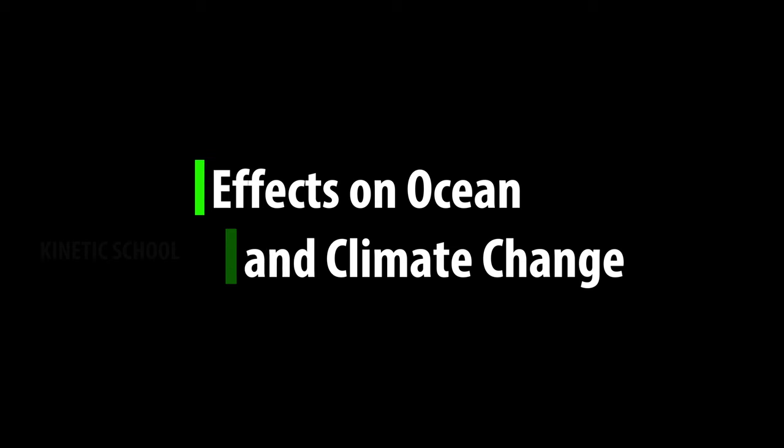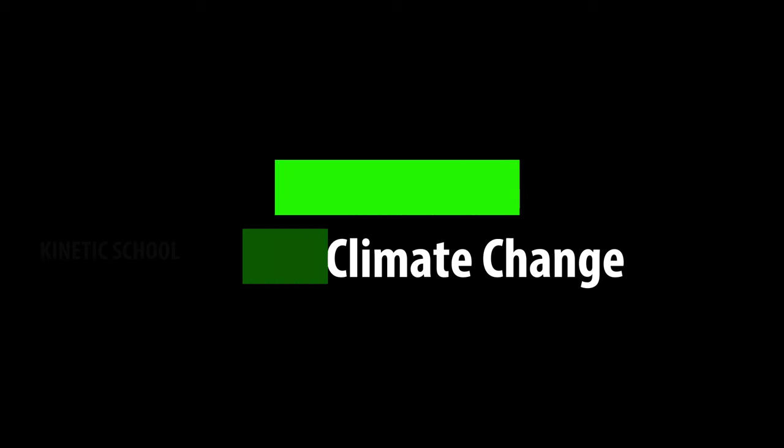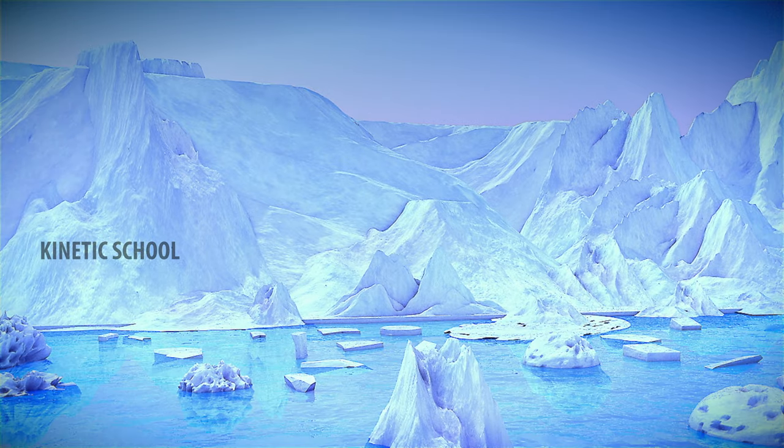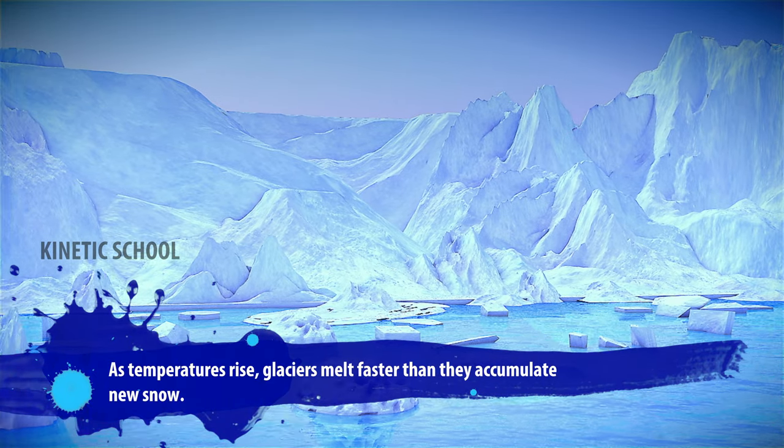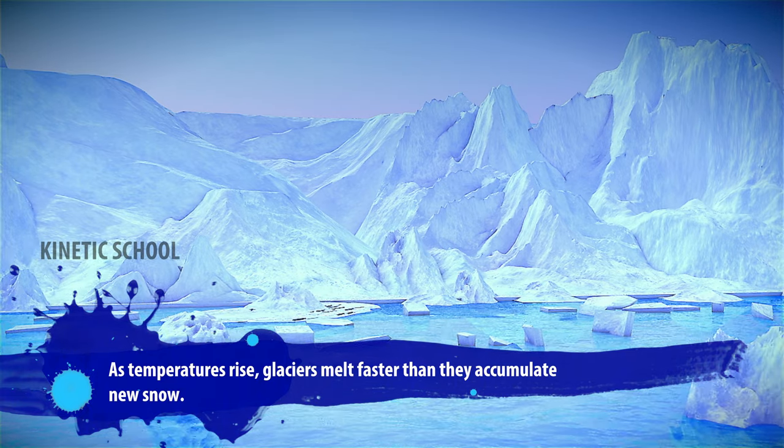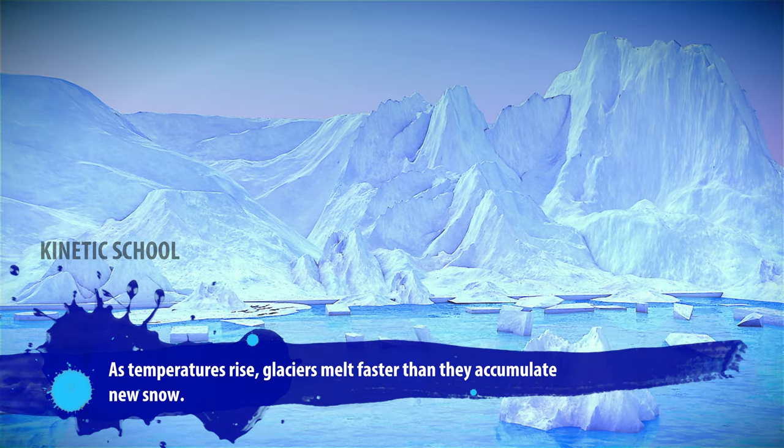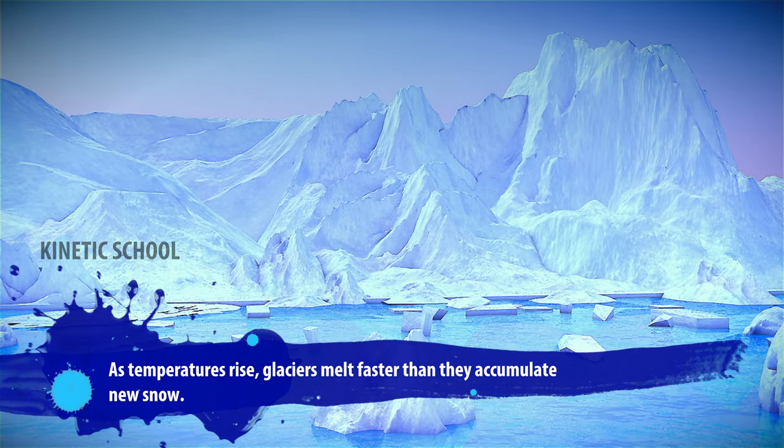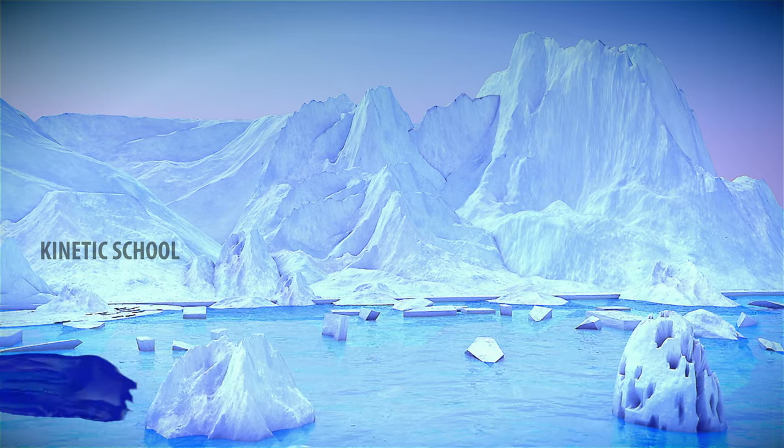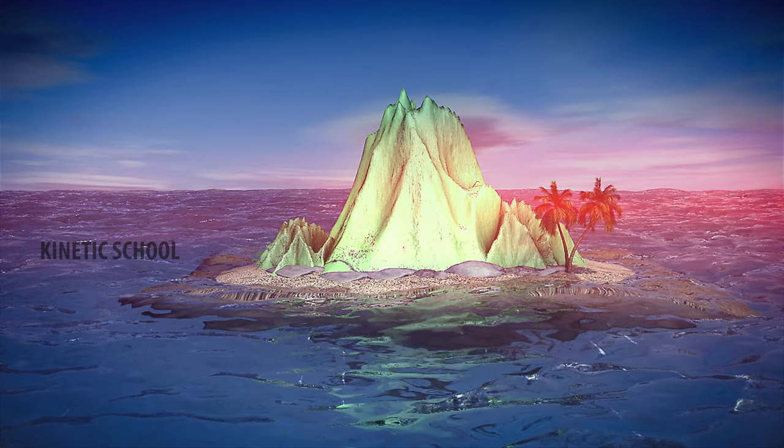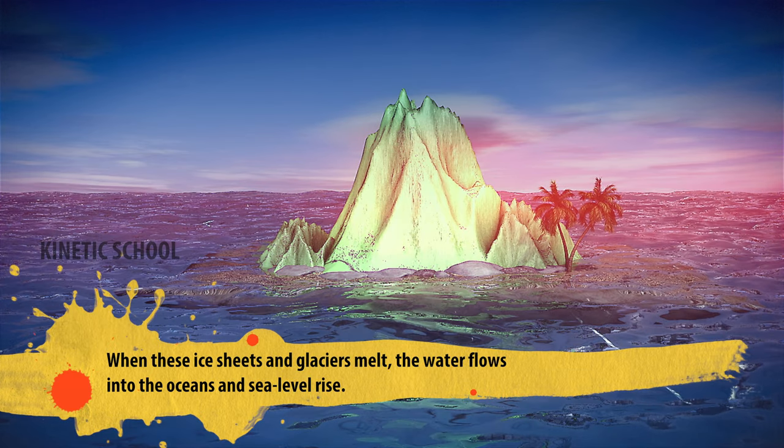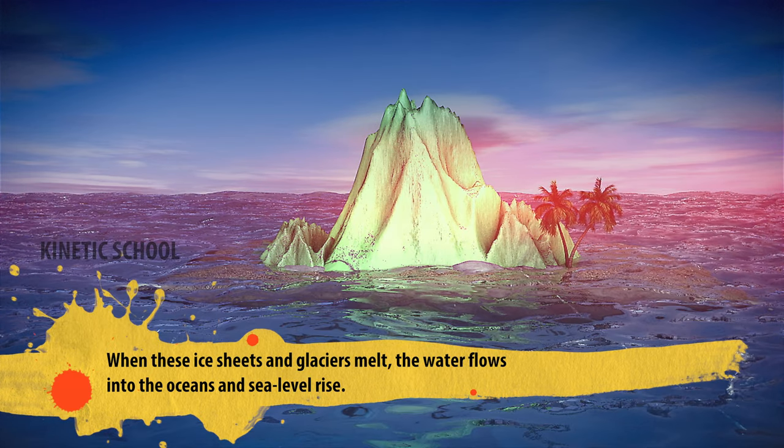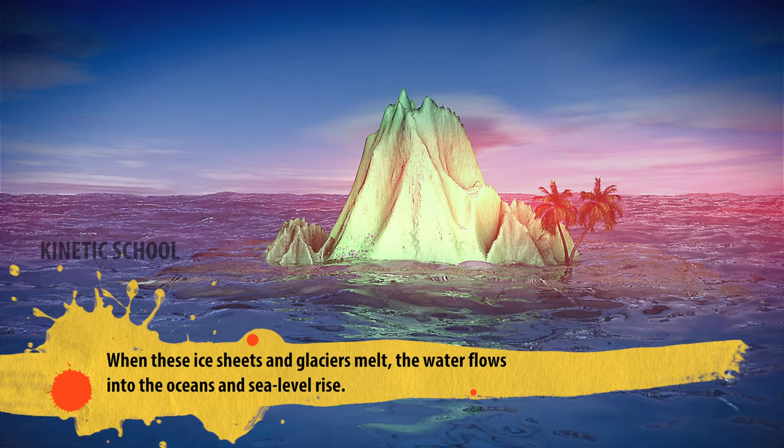Effects on ocean and climate change. As temperatures rise, glaciers melt faster than they accumulate new snow. When these ice sheets and glaciers melt, the water flows into the oceans, and sea level rises.